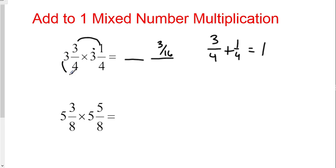Then you're going to multiply three times one more than three. So three times four is twelve, and your answer is twelve and three sixteenths. Real easy.